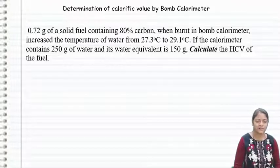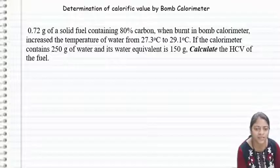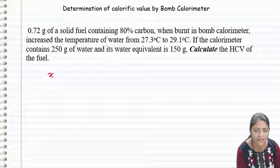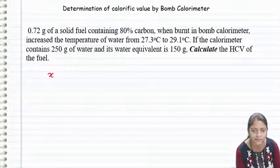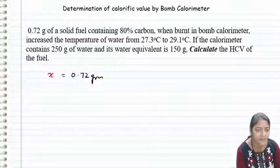So let us see the numerical. As you can see on the screen, 0.72 g of a solid fuel, so x value is 0.72 g of a solid fuel containing 80% of carbon.